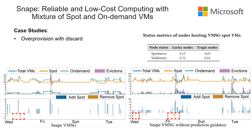To understand SNAP's performance over baselines, we dive into case studies. The first observation is over-provisioning with discard. SNAP adds Spot VMs ahead of time before eviction, and proactively discards some Spot VMs after over-provisioning rather than waiting for eviction. A table shows that nodes hosting retained Spot VMs — called lucky nodes — have higher Spotness and higher Stableness. Nodes hosting discarded Spot VMs — called tragic nodes — are lower on both metrics. SNAP uses this strategy to implicitly replace Spot VMs on lucky nodes.